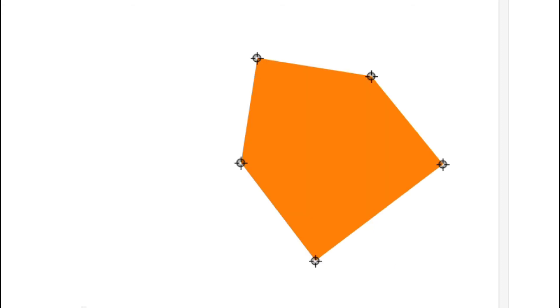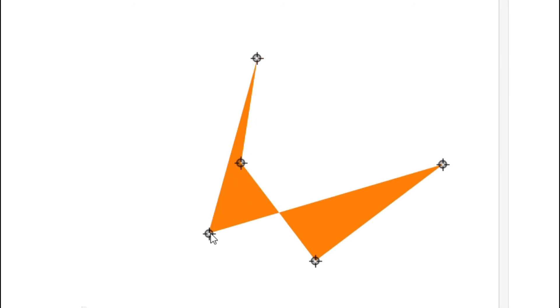Likewise, a simple regular polygon is shown here. When we drag one of its vertex to any of its sides, it also becomes a self-intersecting polygon.